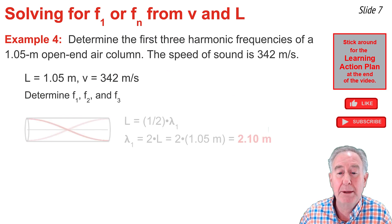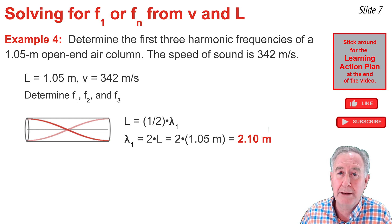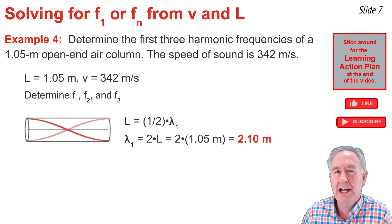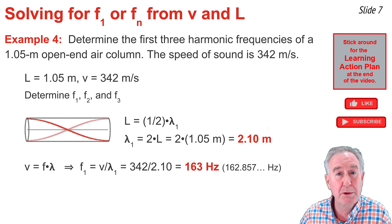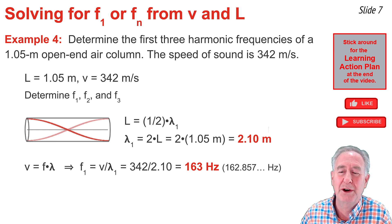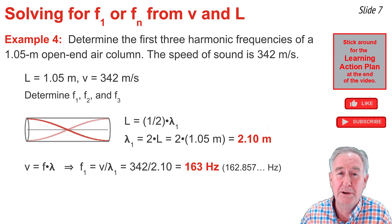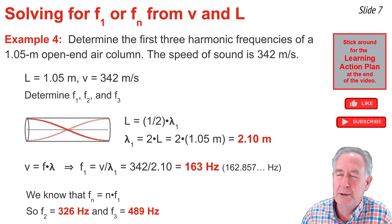I draw the standing wave pattern for the first harmonic and note that within the air column length there is one half of a wavelength. So wavelength = 2 × length = 2 × 1.05 = 2.10 meters. Using v = f × lambda, I rearrange to f1 = v / lambda1 = 342 / 2.10, giving the frequency of the first harmonic. The frequency of the second and third harmonics is then found by multiplying 163 Hz by 2 and by 3, respectively.